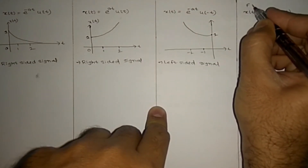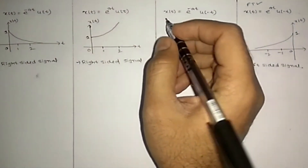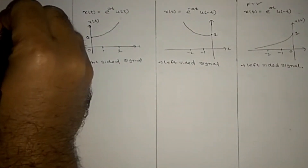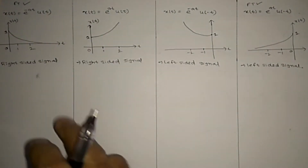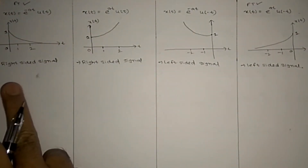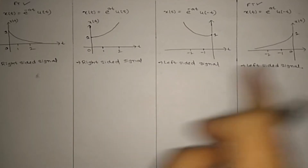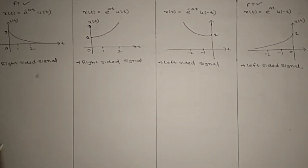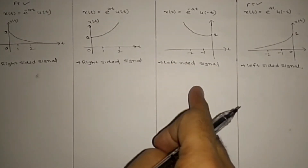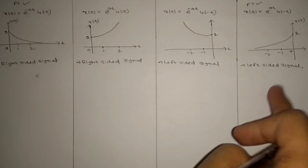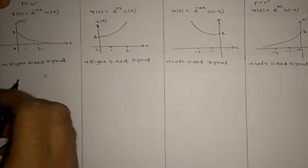Fourier transform has been solved for the absolutely integrable signals. But Laplace transform will give a solution for all 4 types of signals. The first two are right-side signals and the last two are left-side signals. So let us solve one by one.